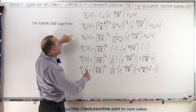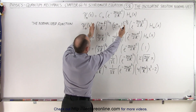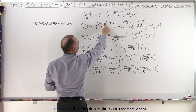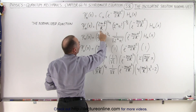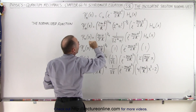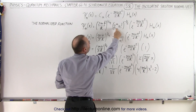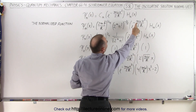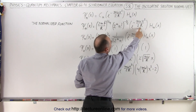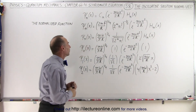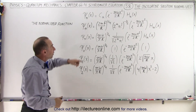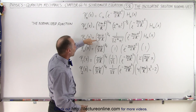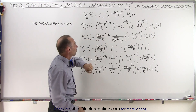Taking C sub n, once we normalize it, it looks like 2mf — the frequency of the oscillation — divided by h-bar to the 1/4 power, times 2 to the n times n-factorial to the minus 1/2 power. We still have e to the minus m omega x squared over 2 h-bar and the Hermitian operator. Since f can be written as omega divided by 2 pi, this simplifies to m omega over pi h-bar to the 1/4 power.